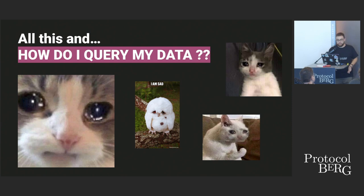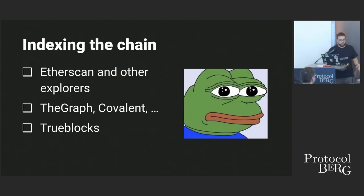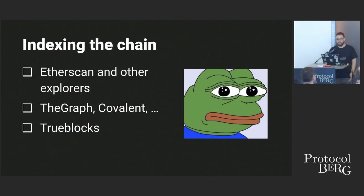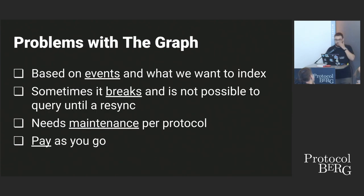Given all these node types, the question becomes: how do I query my data? You can query balances and transactions, but there are many things that are difficult to query directly. Indexers are a solution to this. The most basic indexer everyone has probably interacted with is Etherscan. What Etherscan does behind the scenes is use a node and do additional indexing on addresses. Then there is The Graph, which is based on events, and TrueBlocks, which I'll speak about more in depth.